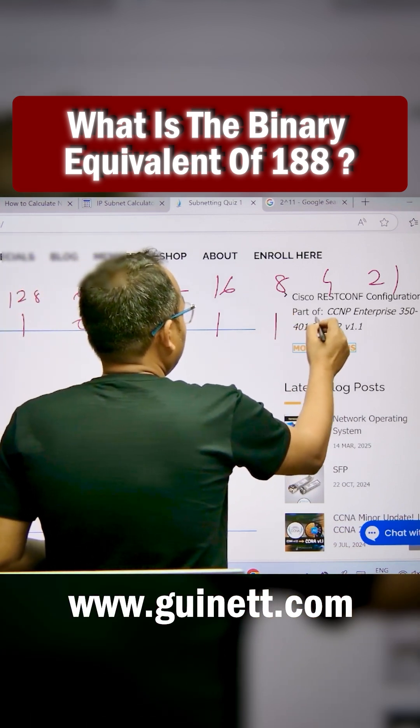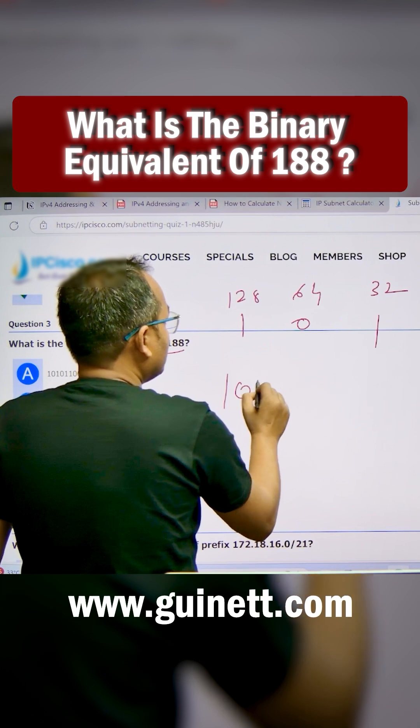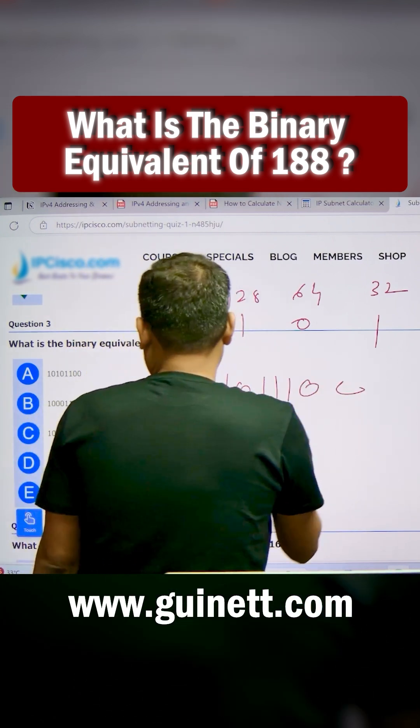1, 1, 0, 0. So the binary number is 10111100.